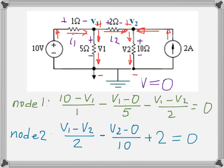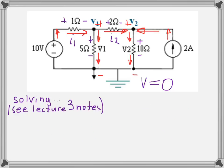We have now produced the most important part of nodal analysis — two nodal equations with two unknowns, V1 and V2. Since the number of unknowns equals the number of equations, we can solve the system. The solving process is skipped here, but the full solution is shown in the lecture 3 notes. Solving the two simultaneous equations gives V1 = 9.09 volts and V2 = 10.09 volts.